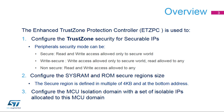2. Configure the SysRAM and ROM secure region size. The secure region is defined in multiples of 4 kilobytes and at the bottom address. And 3. Configure the MCU isolation domain with a set of isolable IPs allocated to this MCU domain.